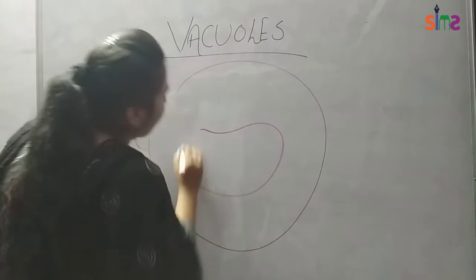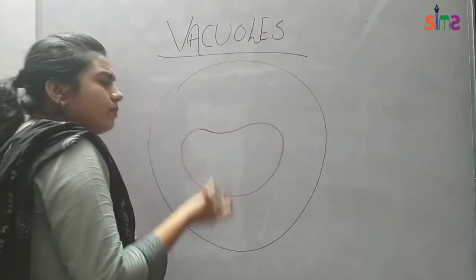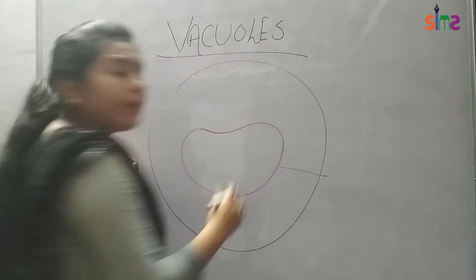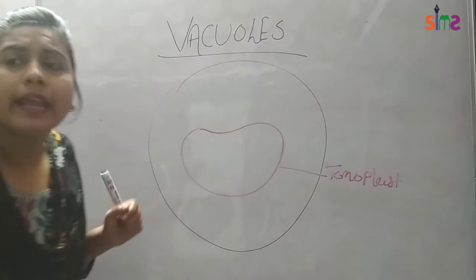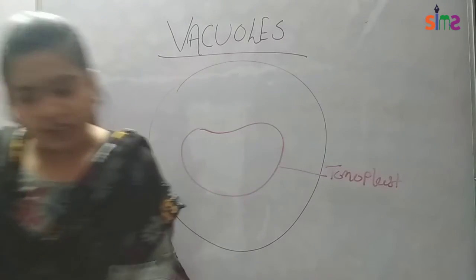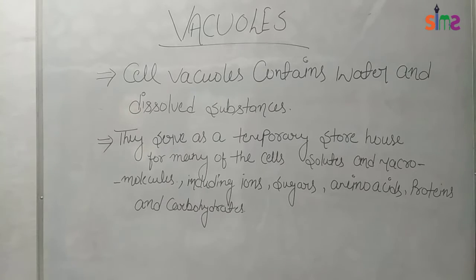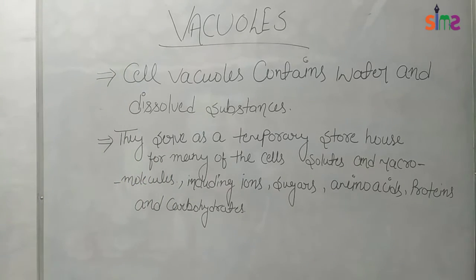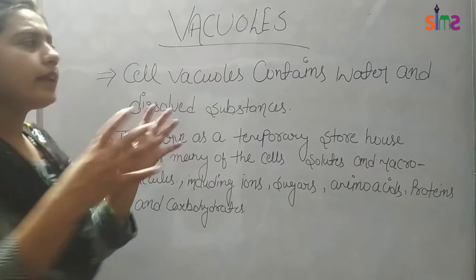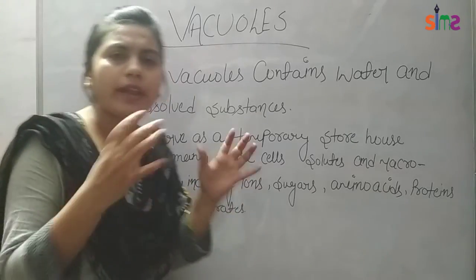The centrally located vacuole stores various substances — materials, waste products — and the tonoplast controls what passes through. Vacuoles store water and dissolved substances. Different vacuoles do different work: contractile vacuoles, food vacuoles, and waste product extraction vacuoles.